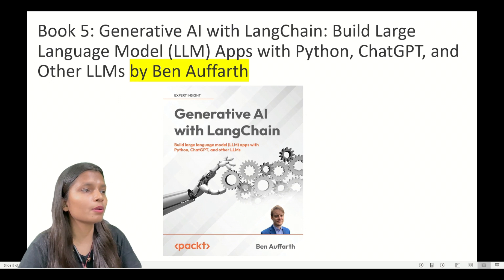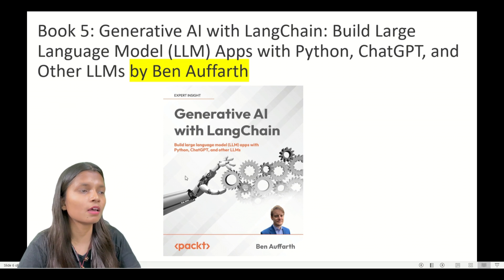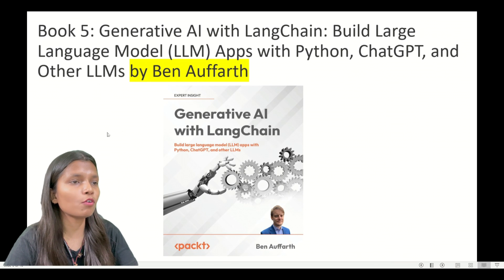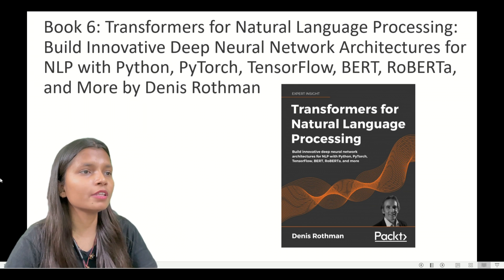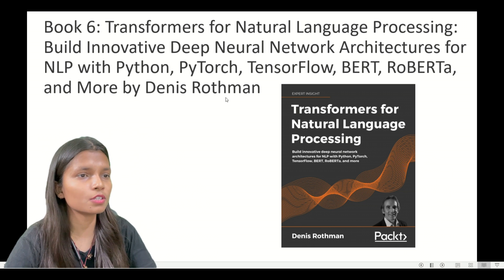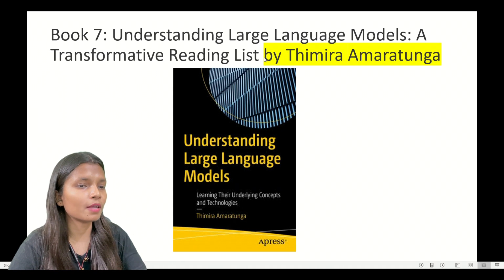Book number five is 'Generative AI with LangChain: Build Large Language Model Apps with Python, ChatGPT and Other LLMs' by Ben Aufar. This is a good one if you are mainly focused on Python. Book number six is 'Transformers for Natural Language Processing: Building Innovative Deep Learning Neural Network Architectures for NLP with Python, PyTorch, TensorFlow, BERT, RoBERTa and more,' written by Denis Rothman.